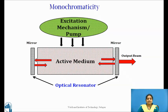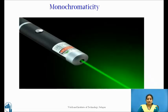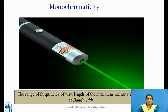Actually, the degree of monochromaticity can be quantitatively described in terms of wavelength bandwidth or frequency bandwidth. The range of frequency of wavelength of the maximum intensity is called as bandwidth. The narrower the line width, higher degree of monochromaticity the laser has and large amount of energy can be concentrated even in small bandwidth due to high monochromaticity of light.